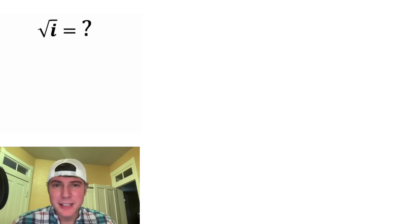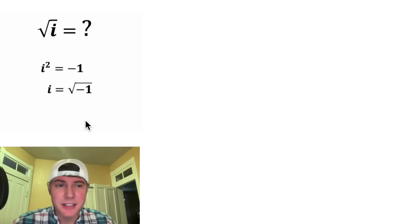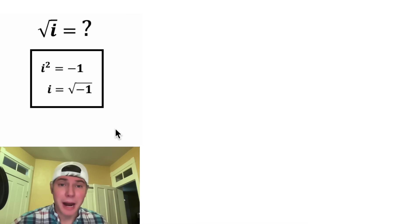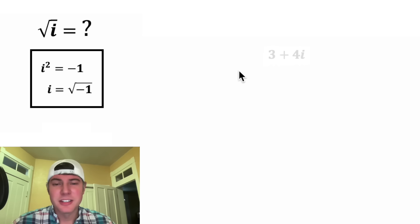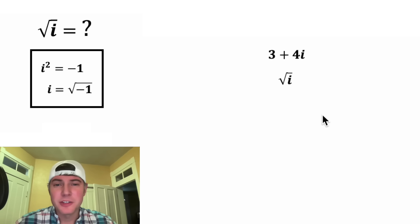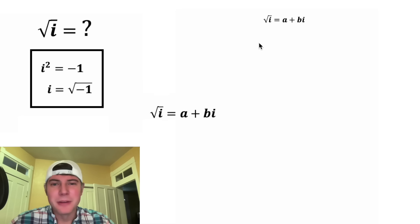First, we should define what is i. i is the imaginary number such that i squared is equal to negative one. Another way you can think of it is i is equal to the square root of negative one. When dealing with imaginary numbers, you can't combine them with real numbers. There's a real part and an imaginary part, and the whole thing is called a complex number. So if we're going to find the square root of i, chances are it's a complex number — something like a plus bi — and we have to figure out what a and b are.